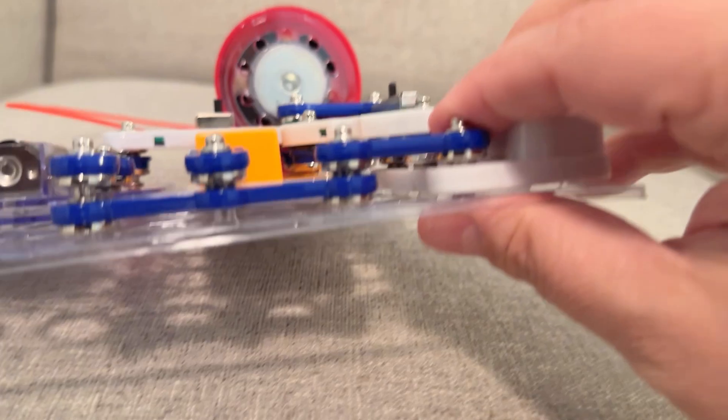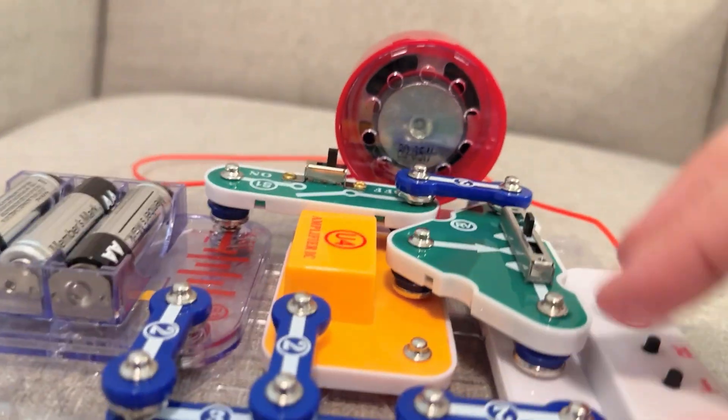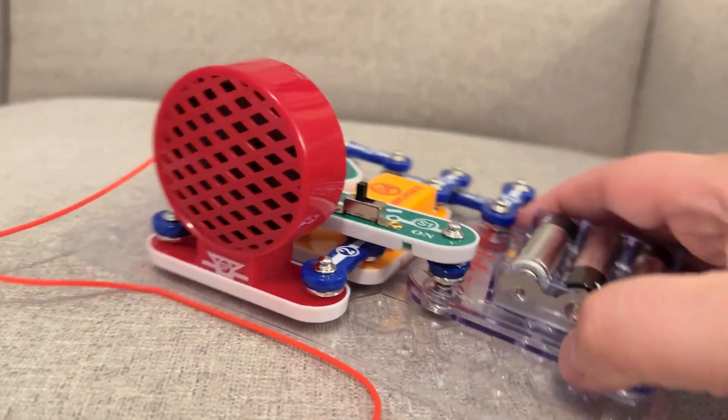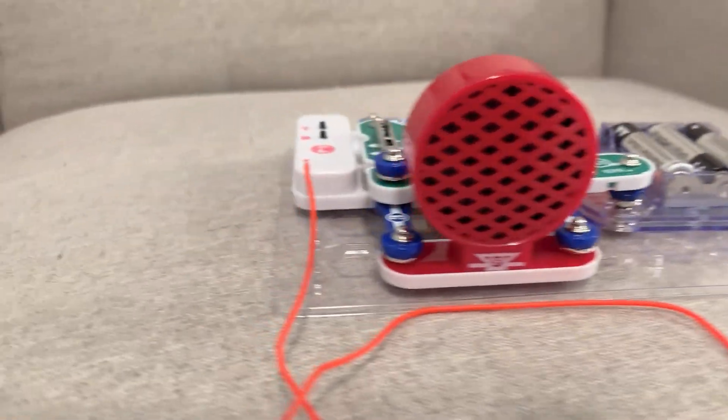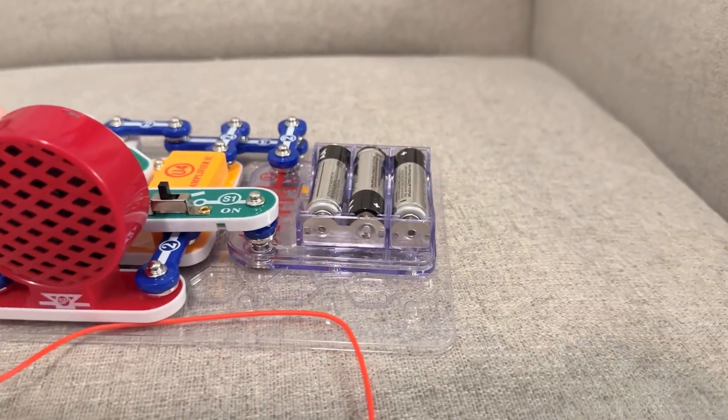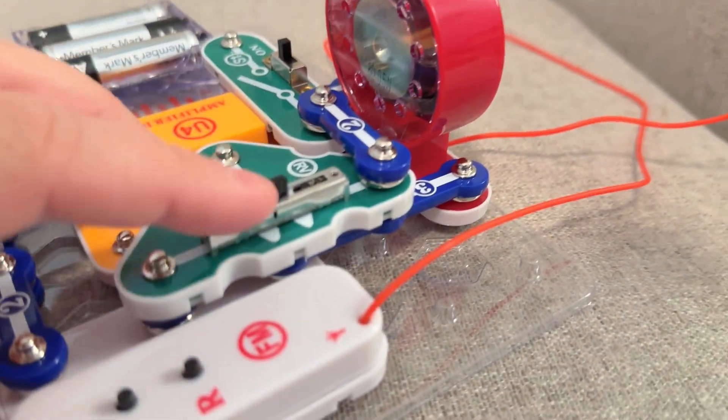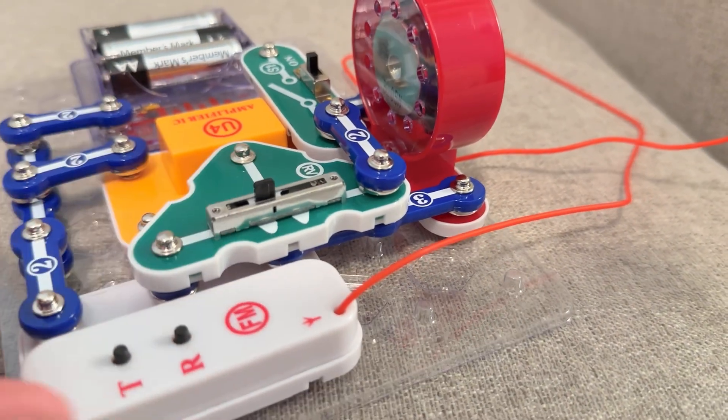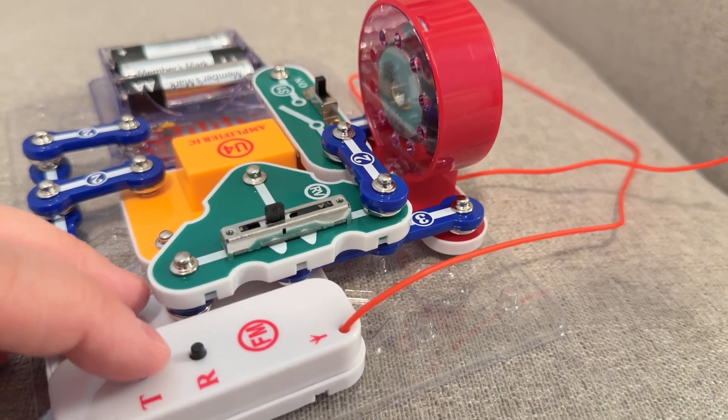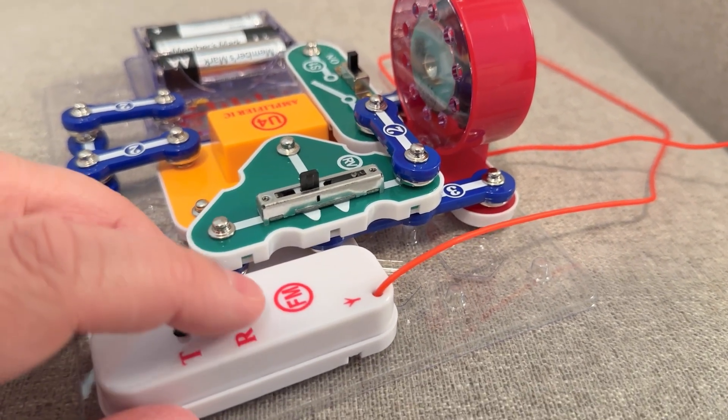So I hope you guys like that. It's a fun little do-it-yourself FM radio. Once again, in case you want to see - volume, on and off right here, volume, and then this changes the channels right there. And the R is for reset, and this is for tuner B for tuner.